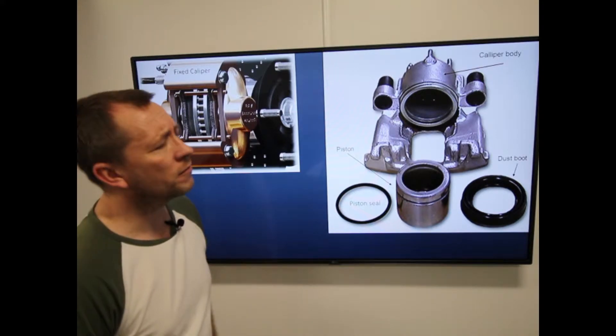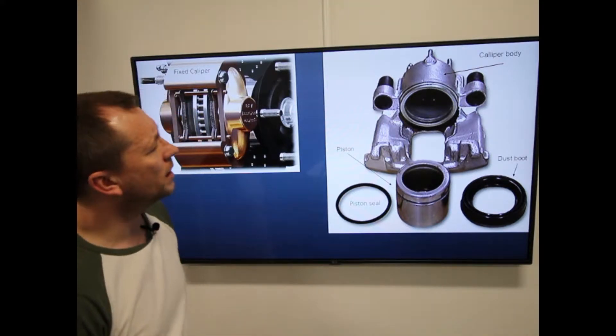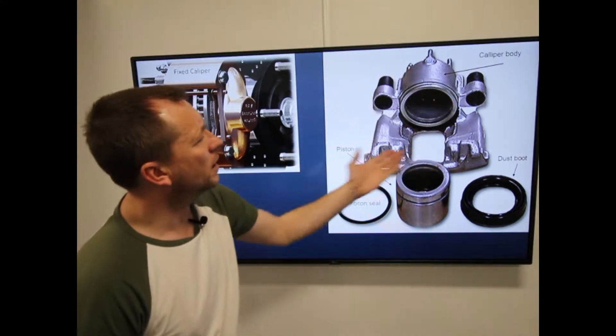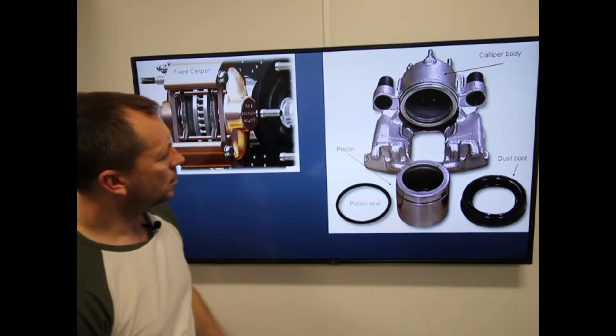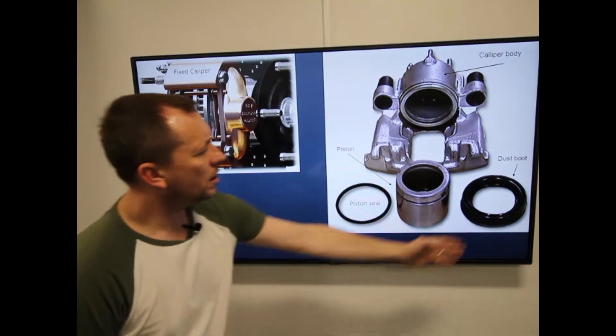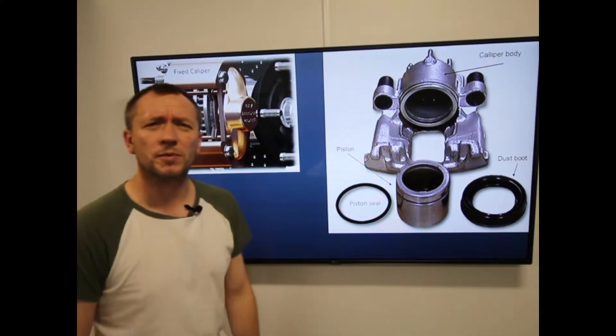If we were to strip the floating caliper down, you'll see there's not many components. We have the main caliper body, we have a piston, we have a fluid seal and over there we have a dust boot. That's it.